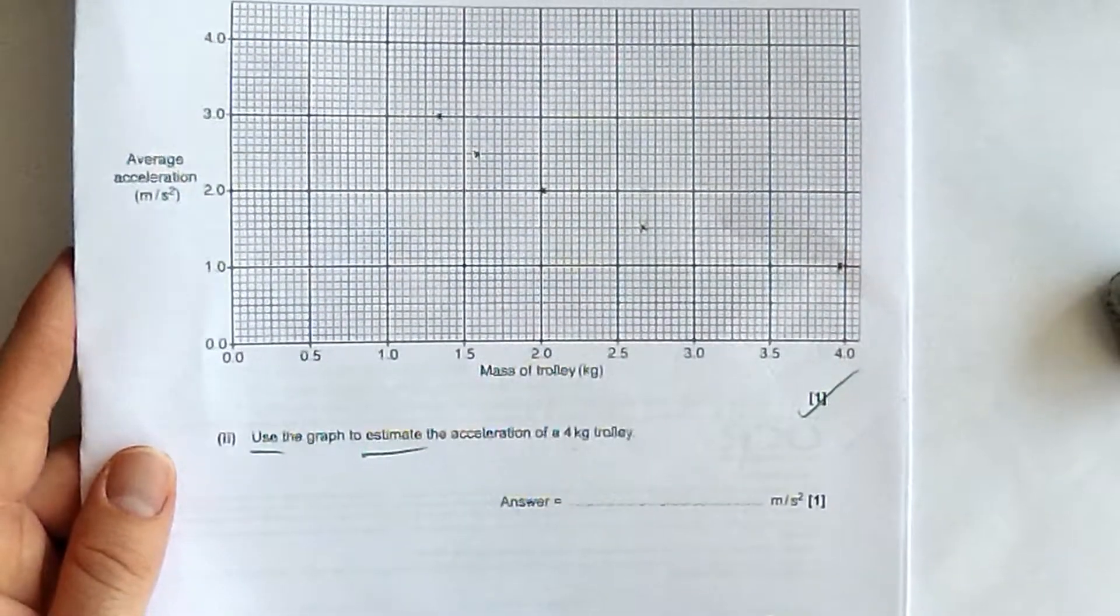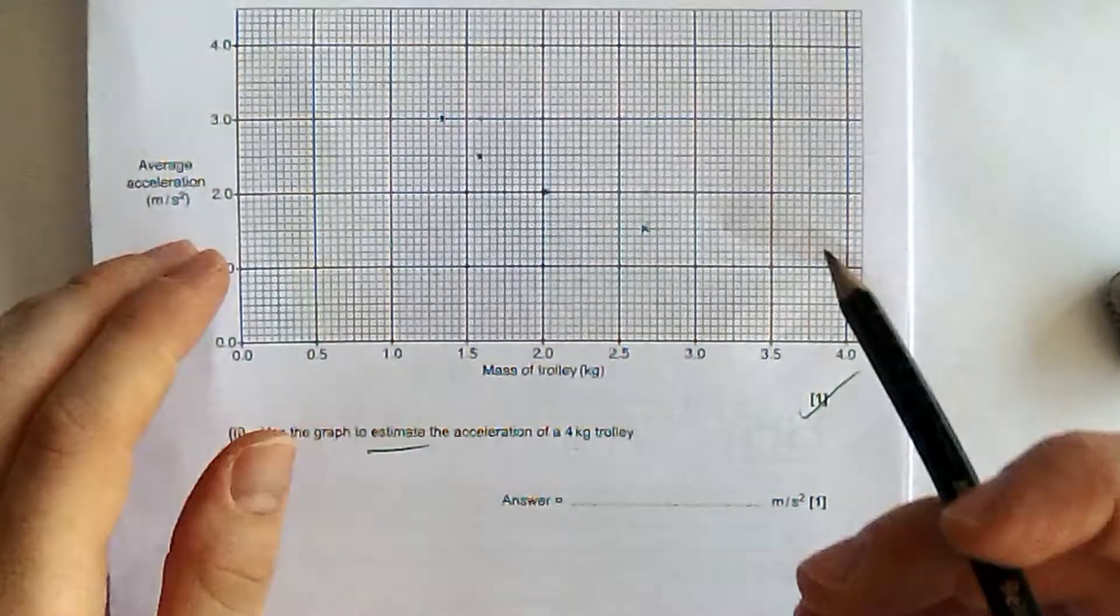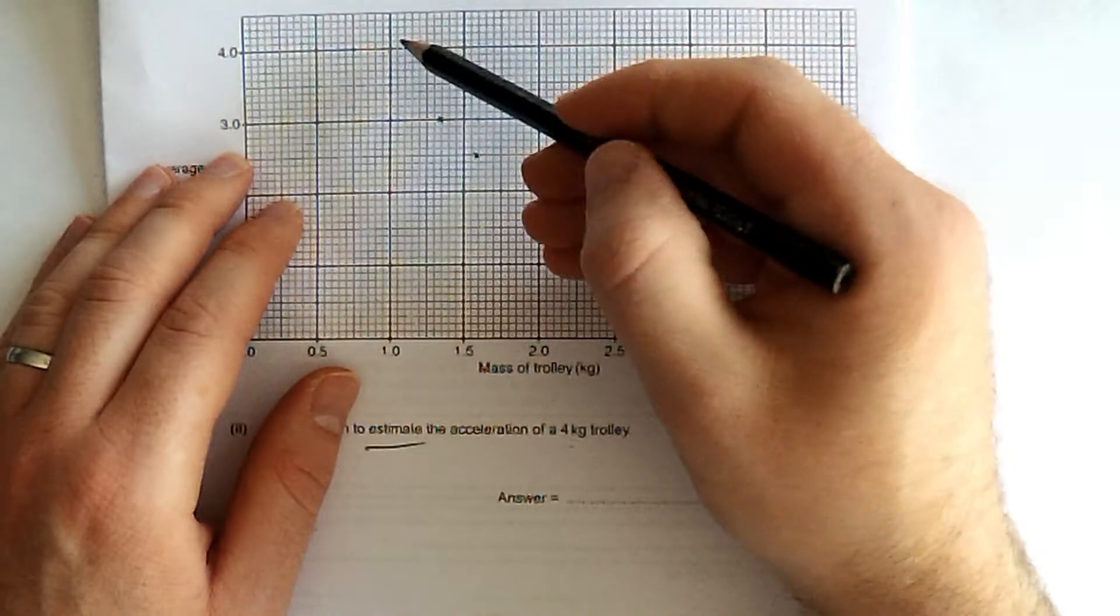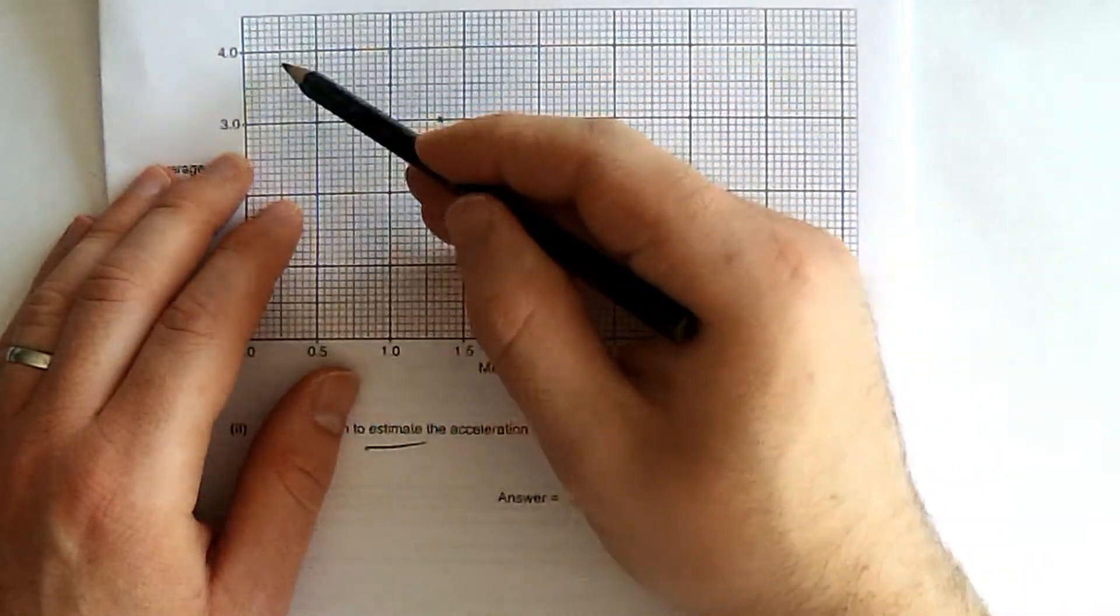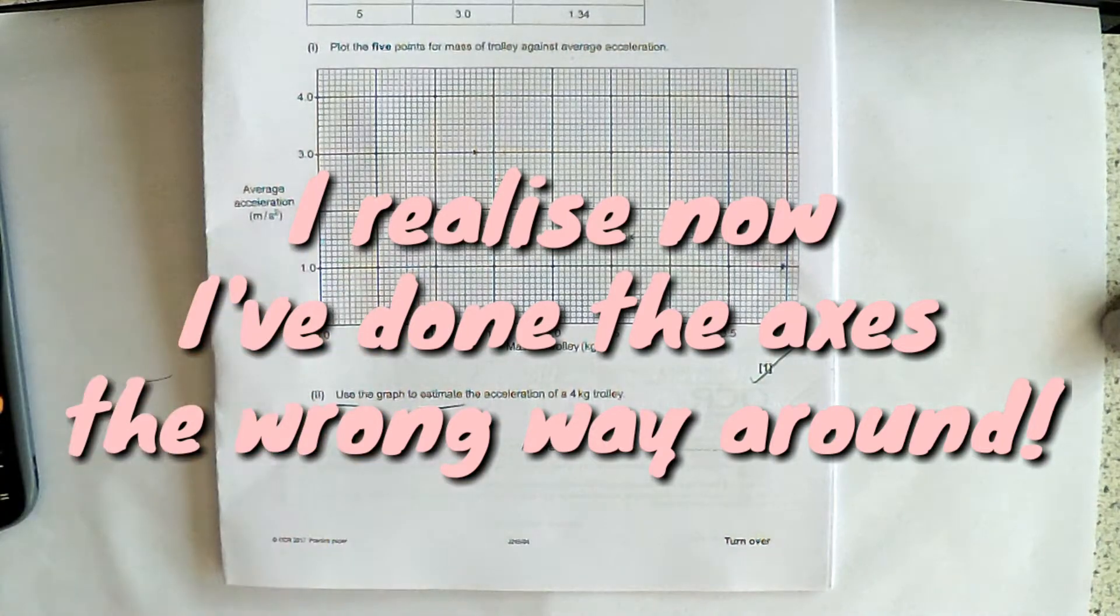So the next thing to do is to use the graph to estimate the acceleration of a four-kilogram trolley. And you should probably see there's something missing from that graph straight away. Well, all these points up here, we need to estimate this point, the four-kilogram trolley here. A lot of people have tried to fit a straight line of best fit to that.